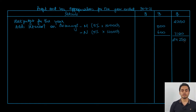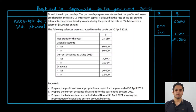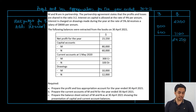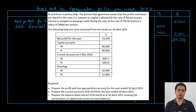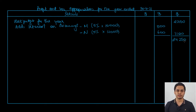Next, we will have to deduct the salary, which is 8,000 — only N is receiving a salary of 8,000 per annum. We will also have to deduct the interest on capital that will be paid by the firm to the partners. The capital balances are 80,000 for M and 60,000 for N, and the rate of interest is 4%. We apply the rate, then deduct the salary and interest on capital from the profit balance to find the residual profit.